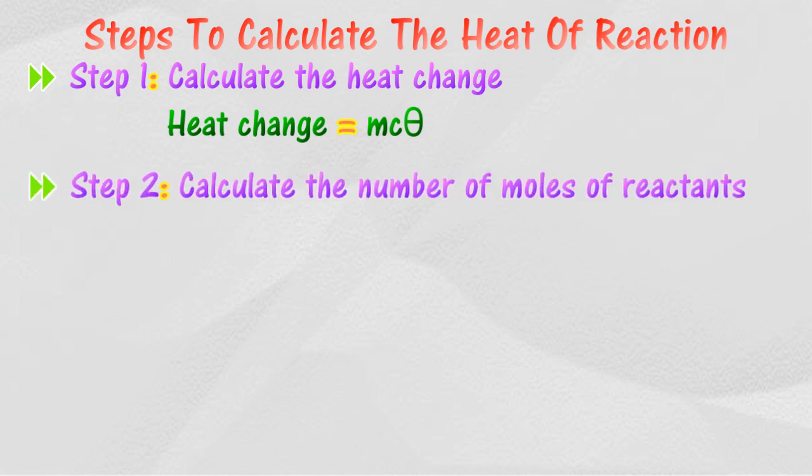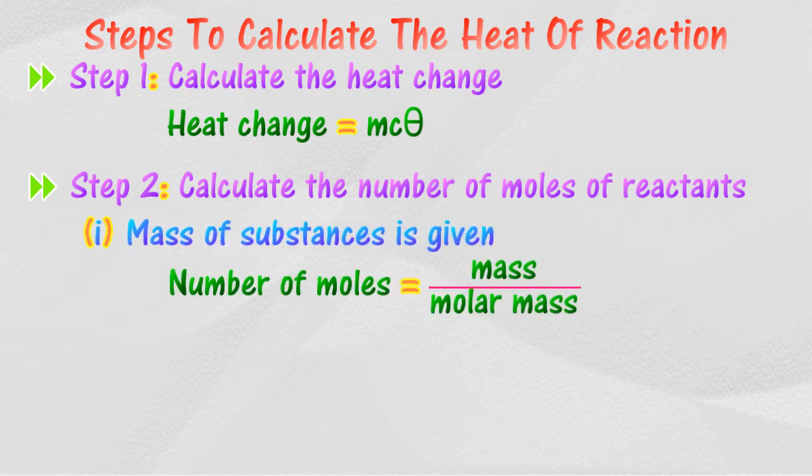Second step is to calculate the number of moles of each of the reactants used. The number of moles can be calculated from the following equations. If the mass of substances is given, the number of moles is equal to the mass of the substance over its molar mass.